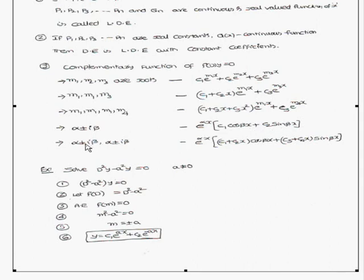If the roots are α ± iβ and α ± iβ (repeated complex roots), then the complementary function is e^(α·x)·[(c1 + c2·x)·cos(β·x) + (c3 + c4·x)·sin(β·x)].